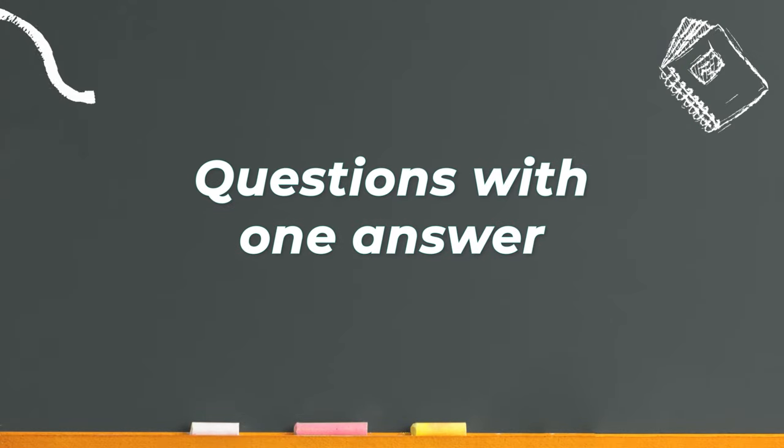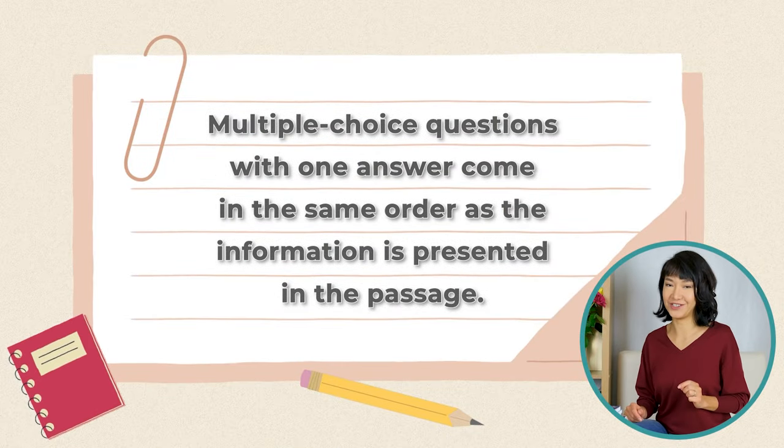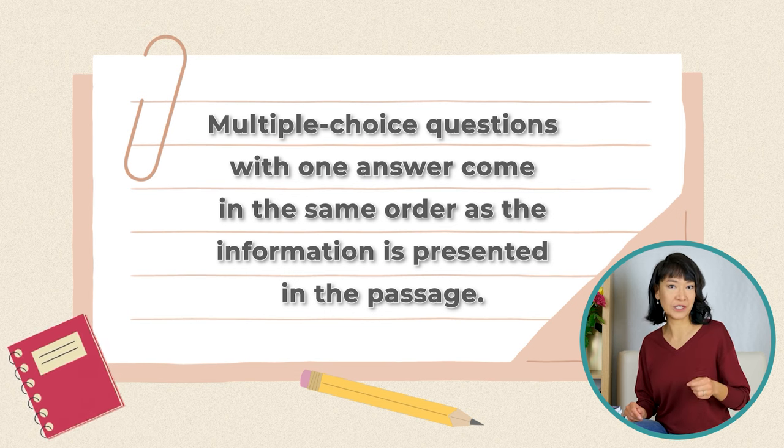One type of these questions is much more complex than the other. But let's examine the strategies for both, beginning with questions with one answer. These usually come in sets of three to five questions and may be in section two or three. One of the most helpful tips is knowing that multiple choice questions with one answer come in the same order as the information is presented in the passage. If you'd like to learn which IELTS reading question types come in order and which don't, watch the video linked below.